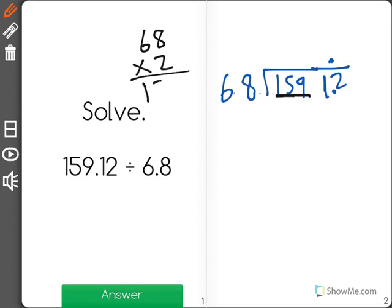And when I multiply it out, I see that 68 times 2 is 136, which is just below 159. So 68 fits into 159 twice, with a remainder on that part of 23.